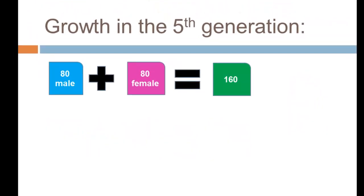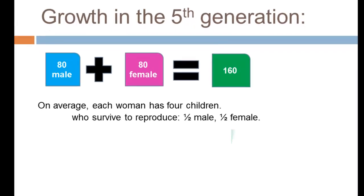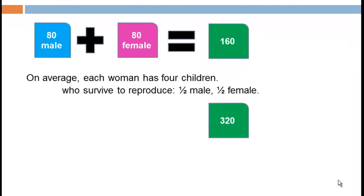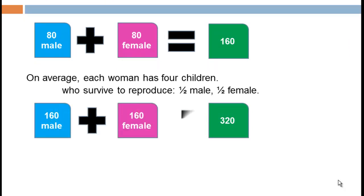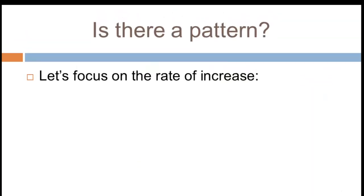For the fifth generation, starting at 160, we take those 80 females and multiply by four. The fifth generation population is now 320, made up of 160 males and 160 females. The increment of growth is 160 individuals. With each succeeding generation we're adding more and more individuals, and this is producing a clear pattern.